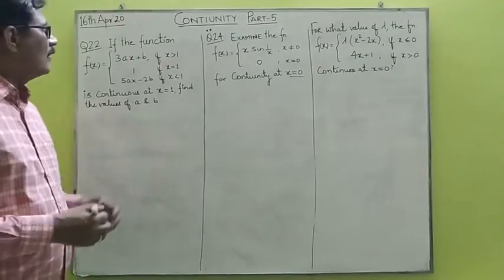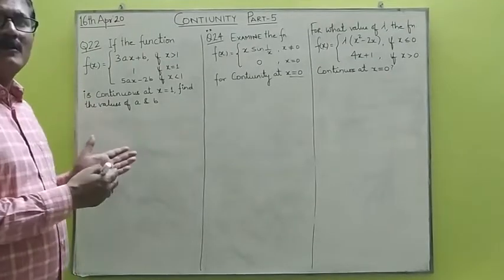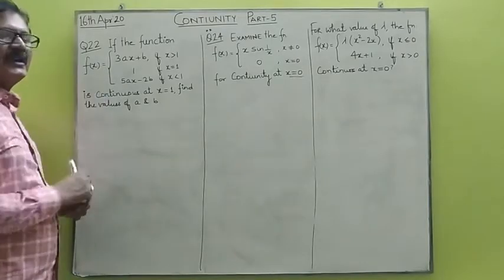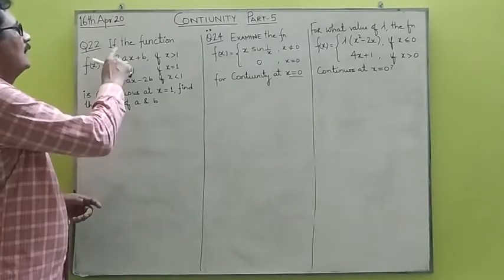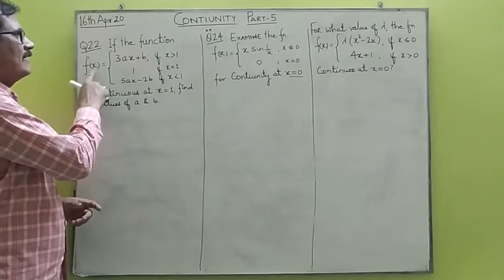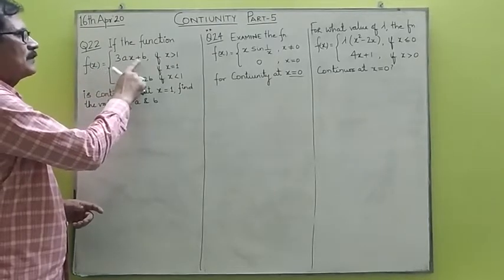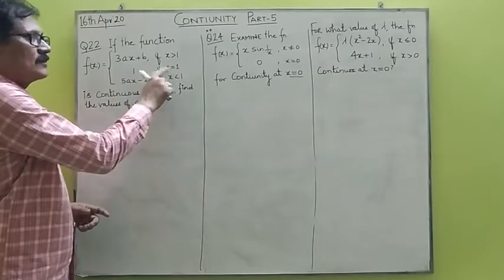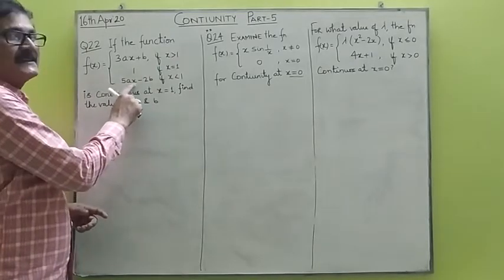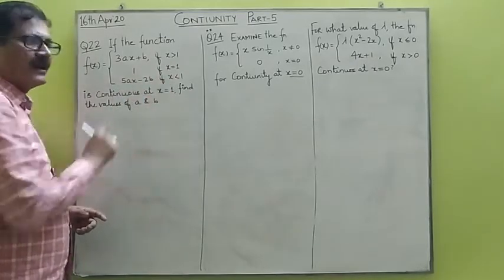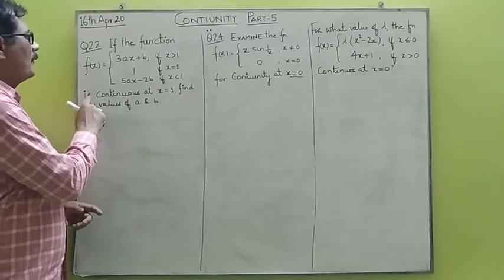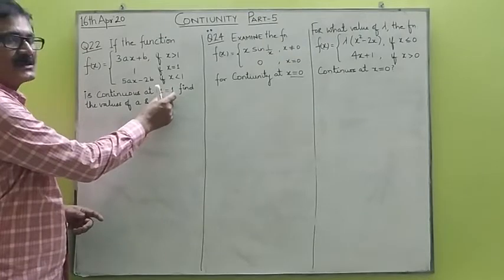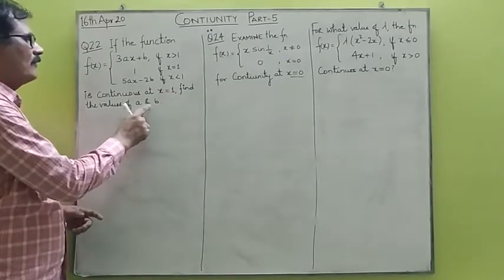Let's begin by doing some more numerical problems on continuity. Look at question number 22 of the exercise. Here the function f(x) has been defined as 3ax plus b for x greater than 1, equals to 1 for x equals to 1, and 5ax minus 2b for x less than 1. You have been given that the function is continuous at point x equals to 1 — find the values of a and b.